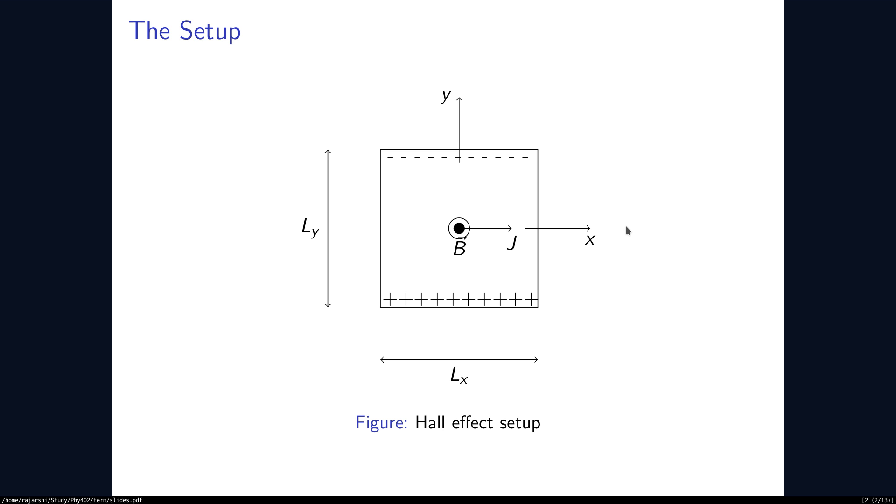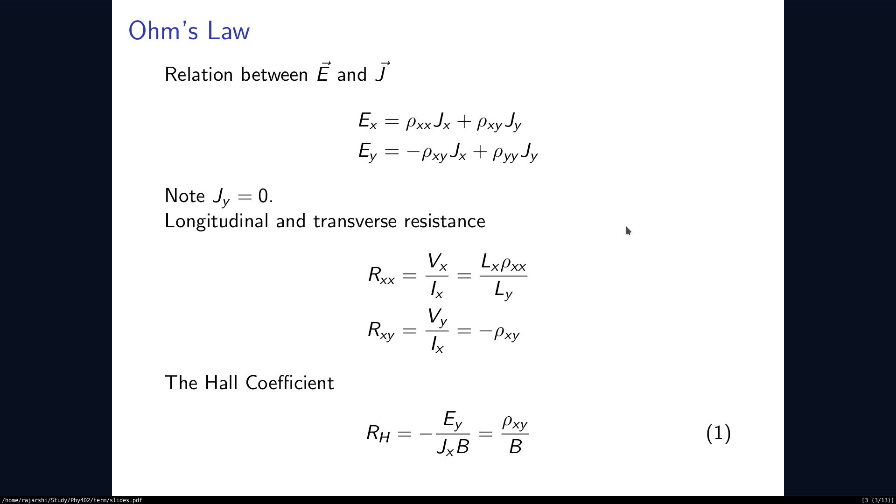Because of this magnetic field B, the flowing charge experiences a force in the y direction and produces a potential difference. This voltage we can measure in the experiment. Since we have a current flowing and the potential developing, we can talk about the resistance.